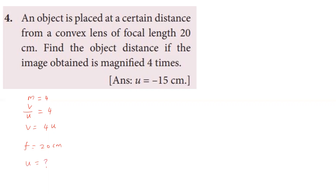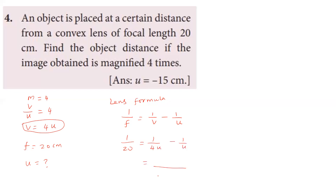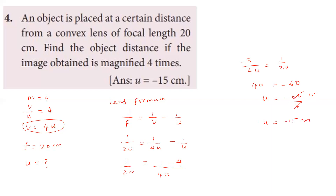To find object distance: magnification v by u equals 4, so v equals 4u. Using the lens formula 1 by f equals 1 by v minus 1 by u, substitute f equals 20 and v equals 4u: 1 by 4u minus 1 by u equals 1 by 20. This gives minus 3 by 4u equals 1 by 20, so u equals minus 15 centimeter. The object distance is minus 15 centimeter.